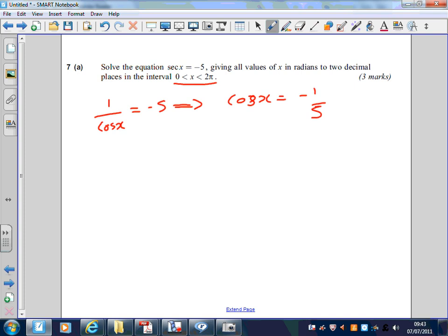I'm solving it, giving answers in radians to two decimal places. I'm going to read the question really carefully. So x equals the principal value, cos inverse of minus 1 over 5. I'm going to type that in.